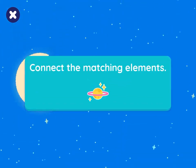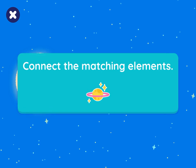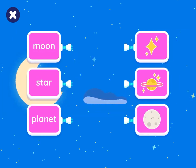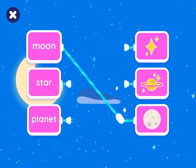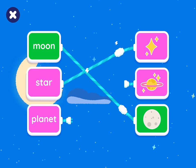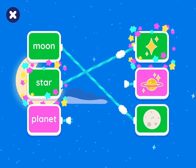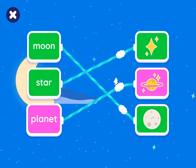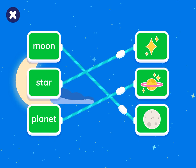Drag to connect the matching elements. Moon. Good match. Star. It's a match. Planet. Well connected.